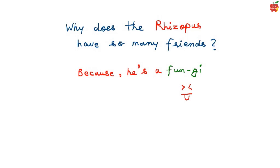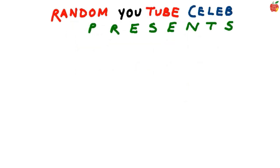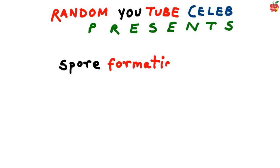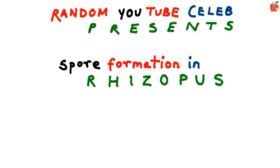Welcome to Random YouTube. Celebrity presents yet another diagram from the chapter 'How do organisms reproduce?' — spore formation and rhizopus. So let's get started.